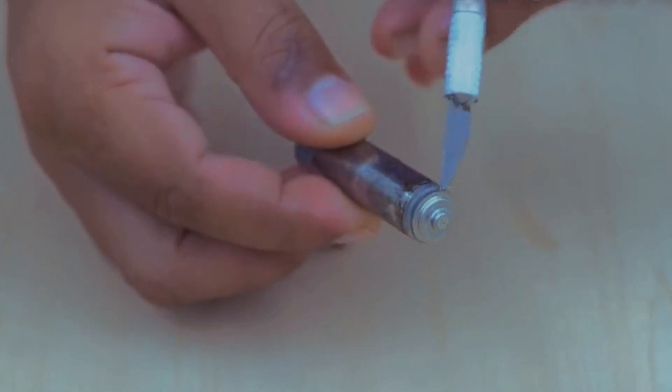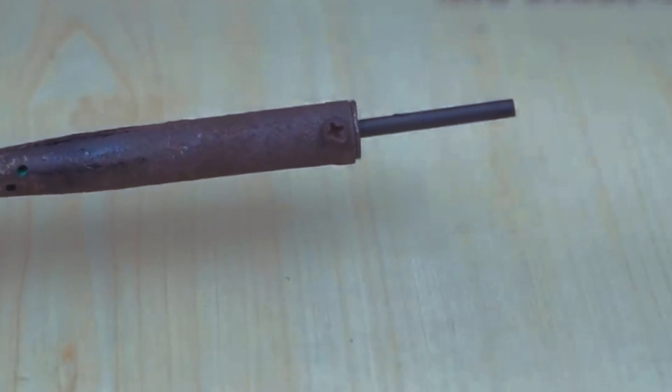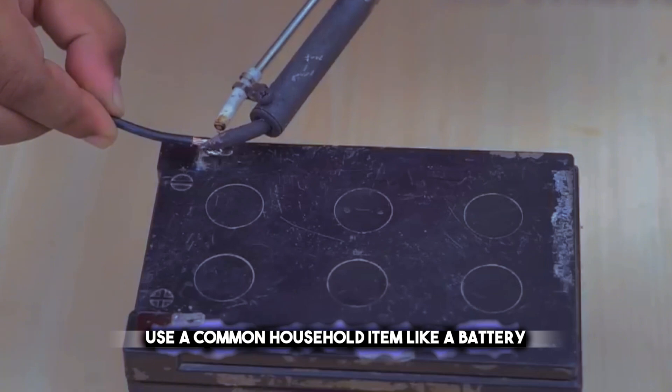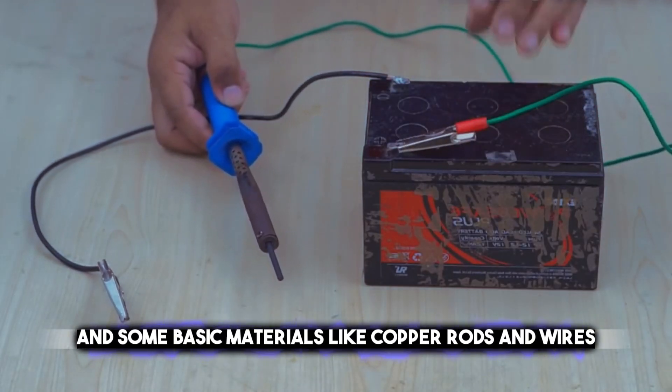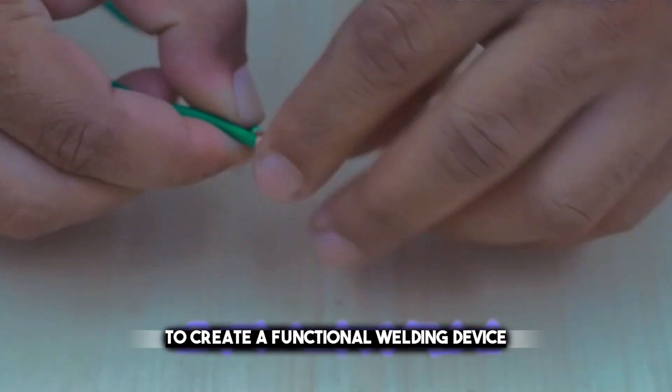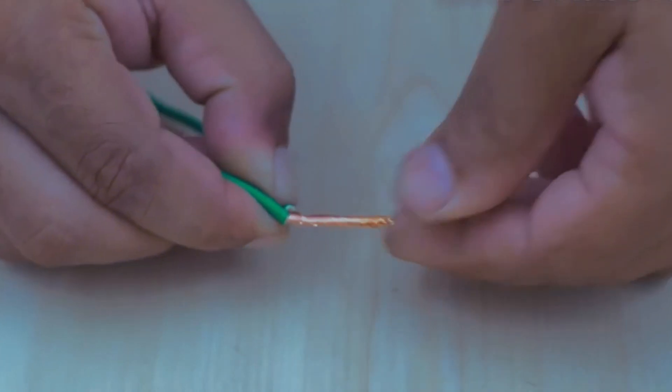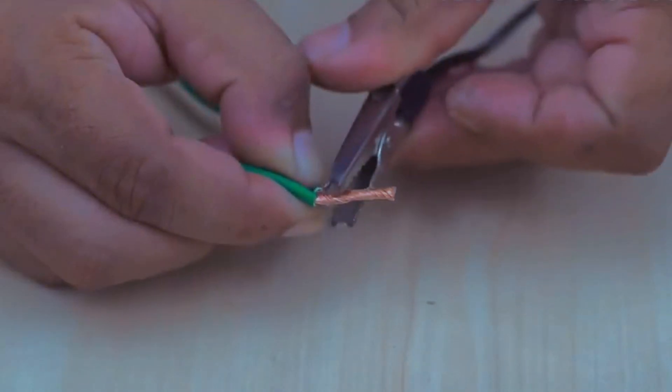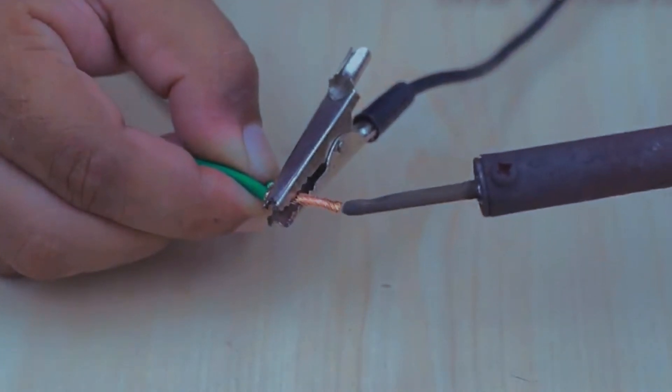You don't need expensive or complicated equipment to do welding. You can use a common household item like a battery and some basic materials like copper rods and wires to create a functional welding device. You can also adjust the size and power of the battery according to your needs and preferences.